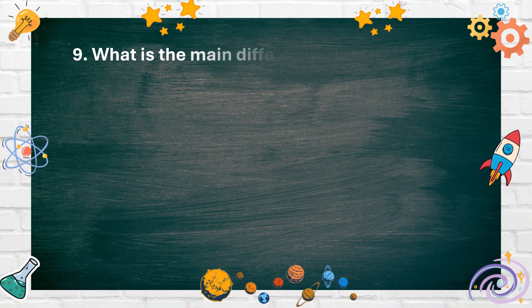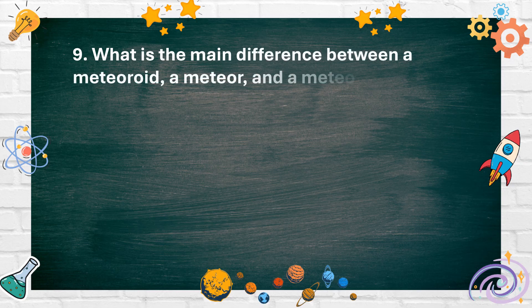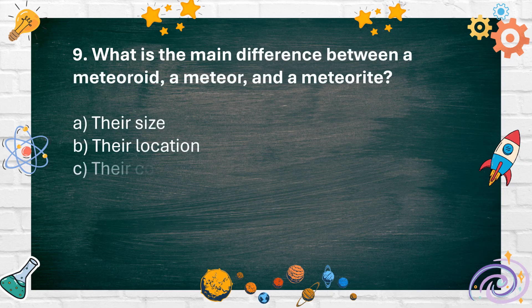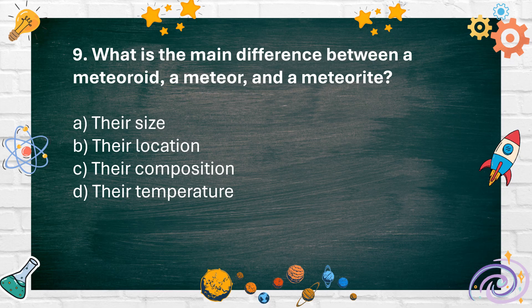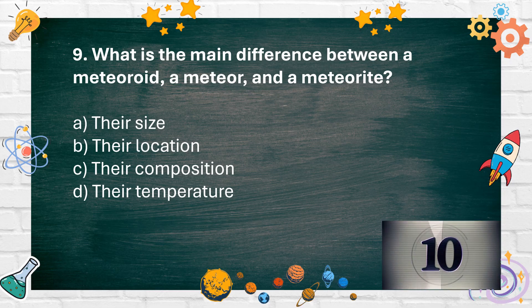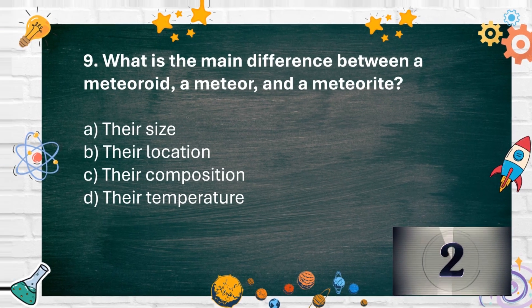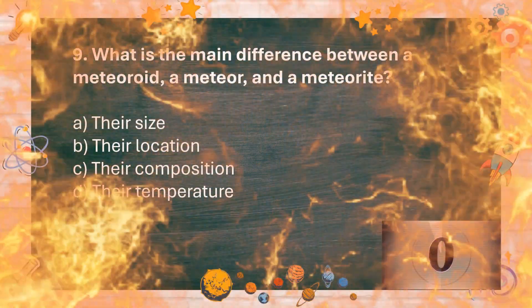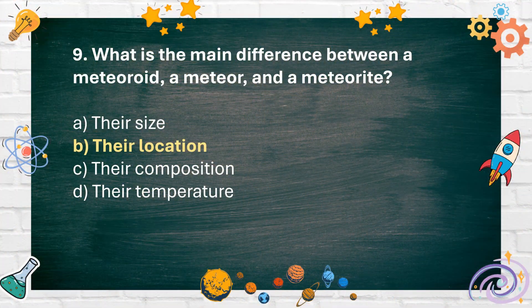Number 9. What is the main difference between a meteoroid, a meteor, and a meteorite? A. Their size, B. Their location, C. Their composition, D. Their temperature. The answer is B. Their location.